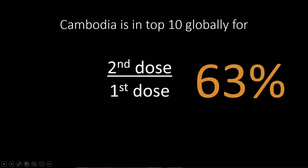Cambodia is in the top 10, not just in Asia but globally, when it comes to the proportion of people who are fully vaccinated divided by the proportion who have taken the first dose. The current value is 63% — so 63% of people who had their first dose have also had their second, putting it in the top 10 globally. They are really pushing the second dose, which is important for the Sinovac and Sinopharm vaccines.